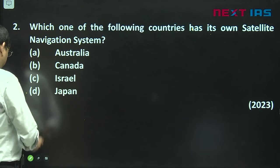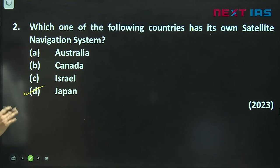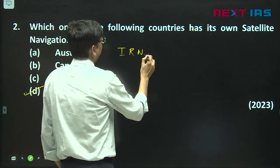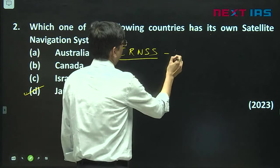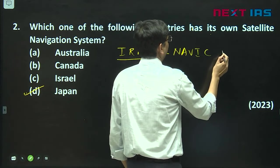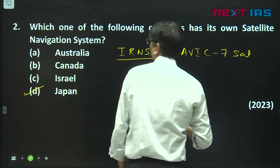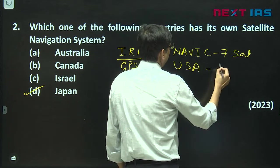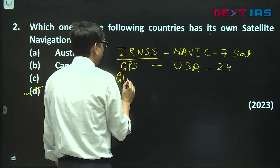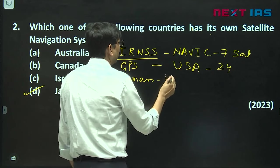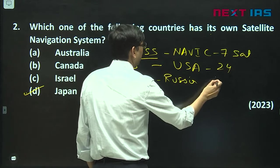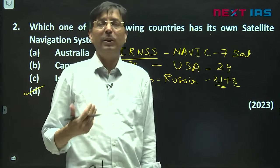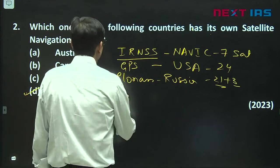This was a very straightforward question: which of the following countries have their own satellite navigation system. You all know that the countries with navigation systems: IRNSS, Indian Regional Navigation Satellite System also known as NAVIC, has got seven satellites. Then GPS of USA with 24 satellites, GLONASS of Russia, 21 plus 3 satellites. Why 3? Because 3 in temporary orbit, 21 in final orbit.